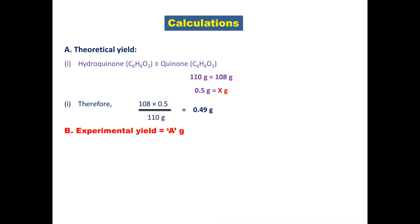Experimental yield equals a gram. Now let us calculate practical percent yield. Since 0.49 gram of product equals 100% yield, therefore a into 100 upon 0.49 equals percent yield.